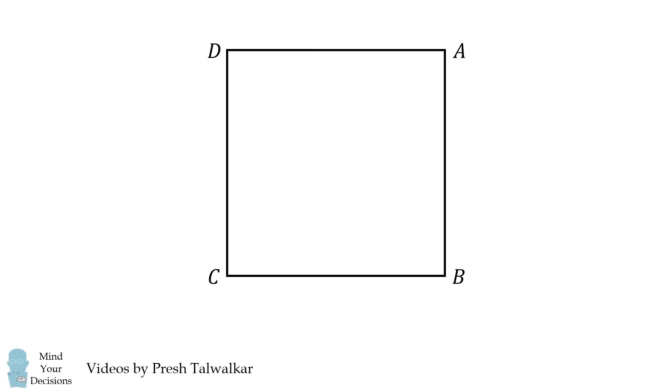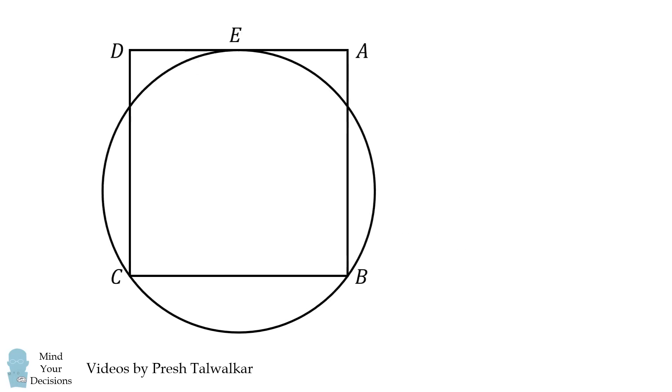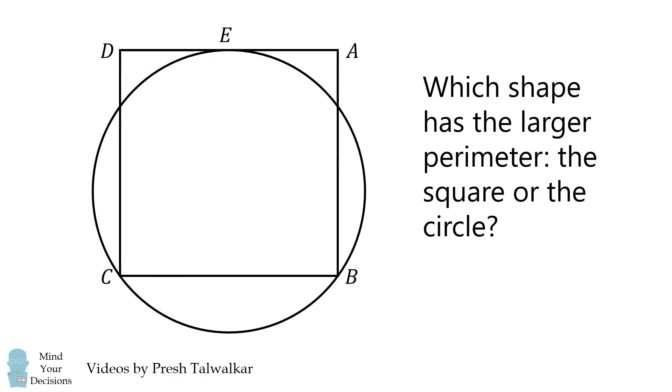In square ABCD, E is the midpoint of AD. Construct a circle between the three points E, B, and C. Which shape has the larger perimeter? The square or the circle?